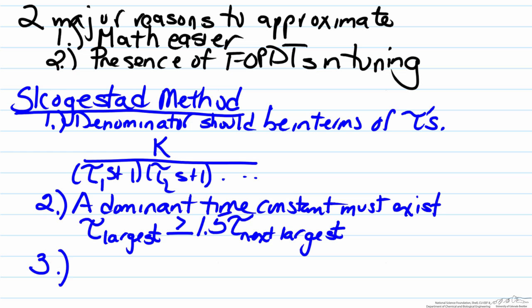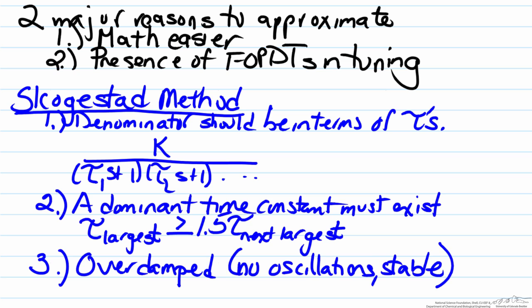The third thing to keep into account for the Skogestad method is the fact that the system should be overdamped. In other words, this means the fact that there's no oscillations, so no imaginary roots. And it's a stable system, so in other words there's no positive root in the denominator, or all the tau's are positive.